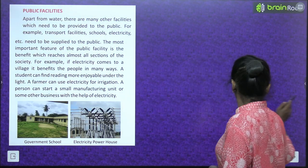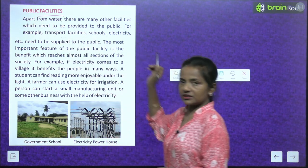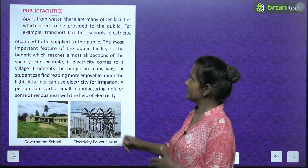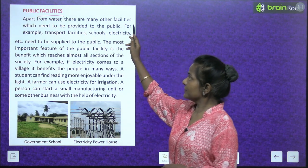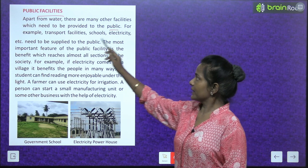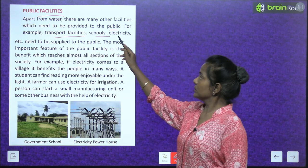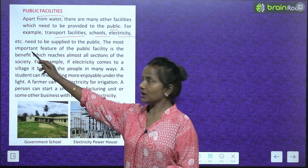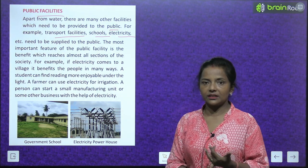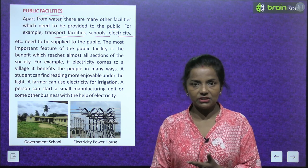Public facilities. Ab public facilities kya hai? Apart from water, there are many other facilities which need to be provided to the public — for example, transport facilities, schools, electricity, etc. Public ko transport facility bhi chahiye hoti hai, schools ki bhi facility chahiye hoti hai, aur electricity bhi chahiye hoti hai.